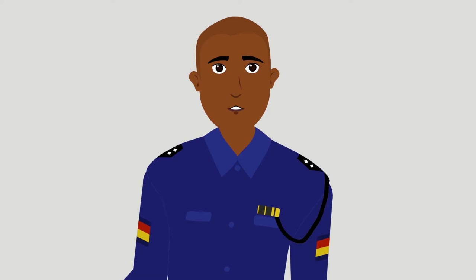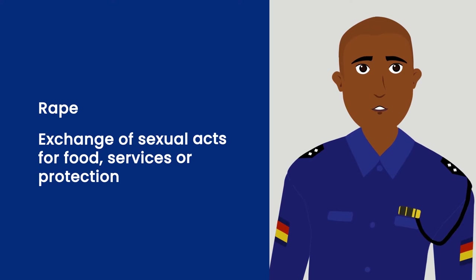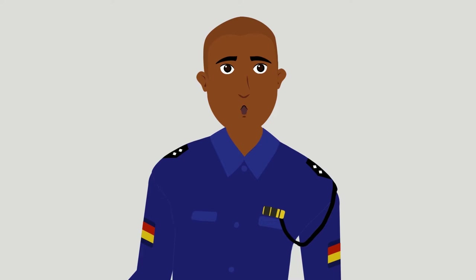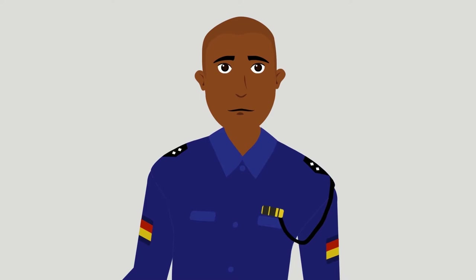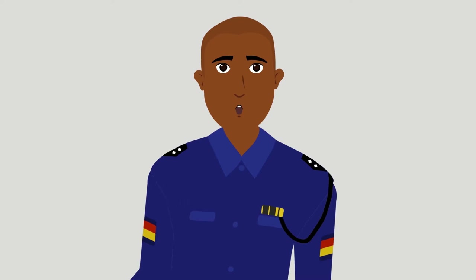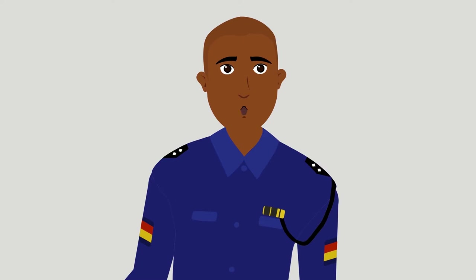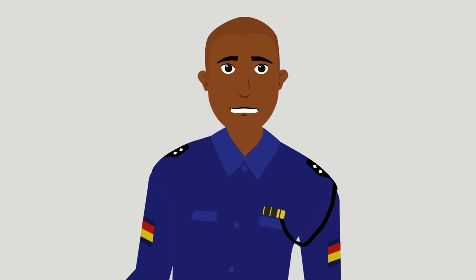In the early stages of an emergency, sexual violence is the most immediate and life-threatening form of gender-based violence. This includes rape and the exchange of sexual acts for food, services or protection. Sexual violence against women and girls has been widely reported in conflict settings and during displacement. Violence against women and girls may increase as the systems and structures that protect them — including families, communities, law enforcement, community norms or religious codes — are weakened or destroyed.